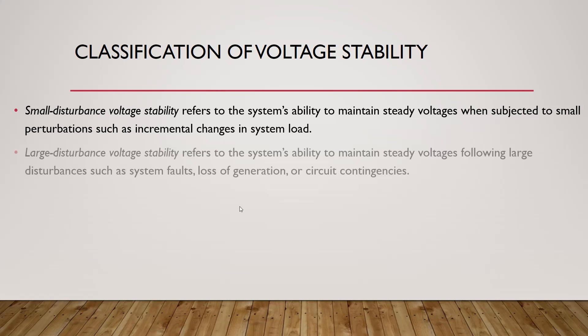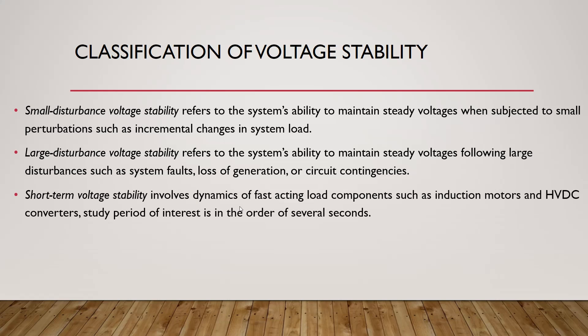Number two is large disturbance voltage stability, which means maintaining a steady voltage after a large disturbance such as system faults, tripping of a transmission line, short circuits on transmission lines, or loss of generation.